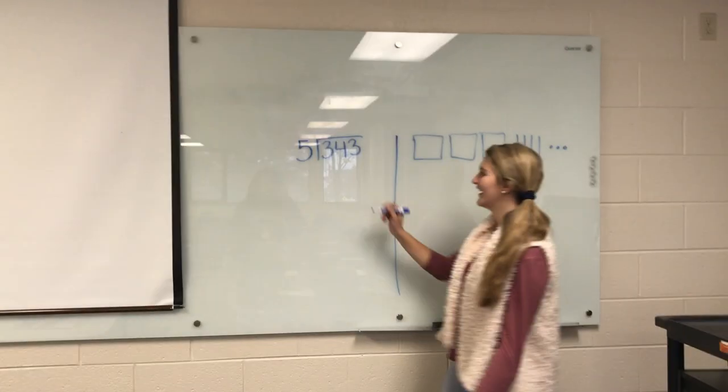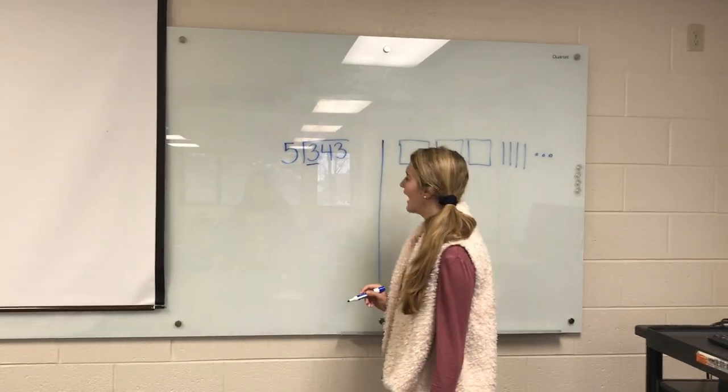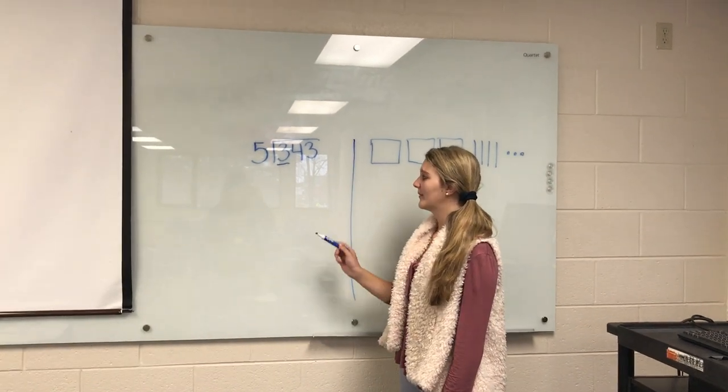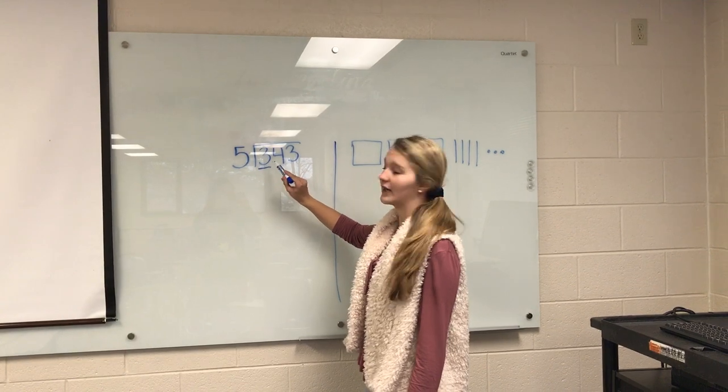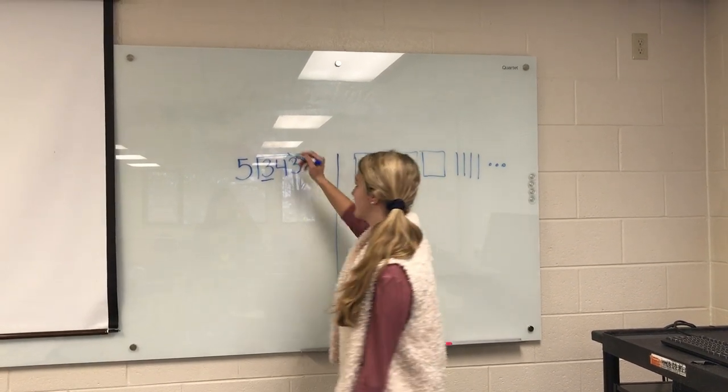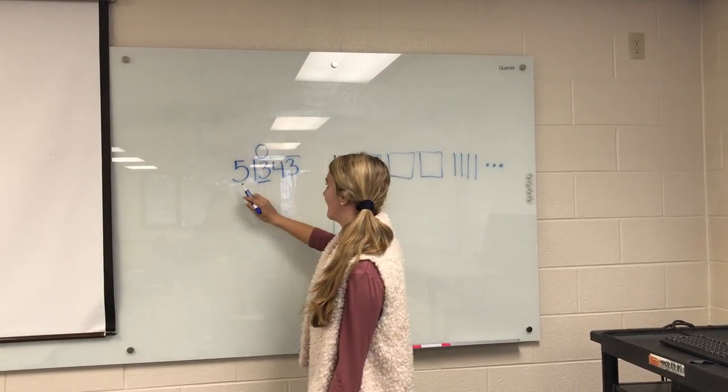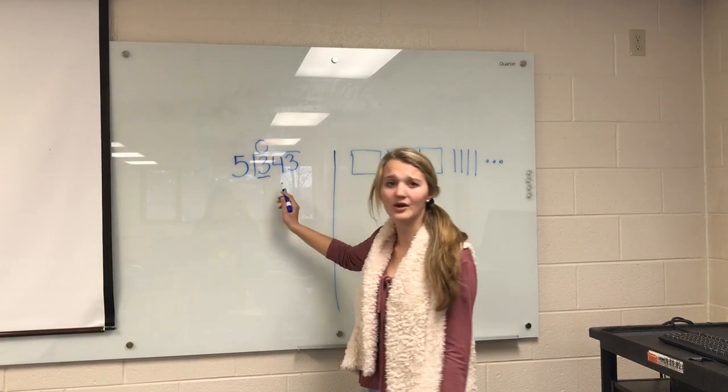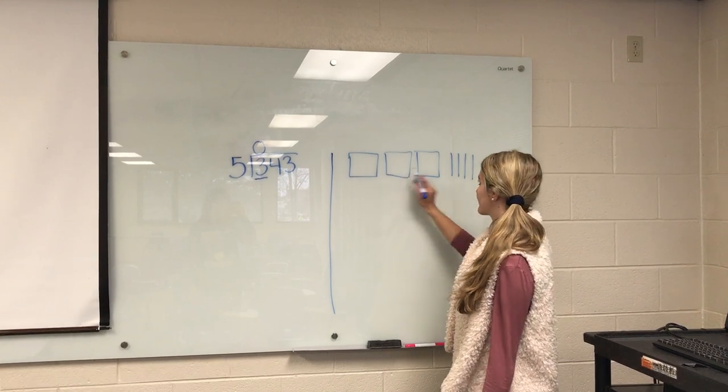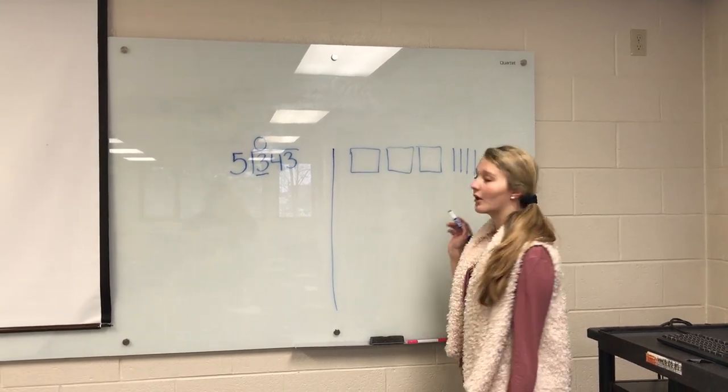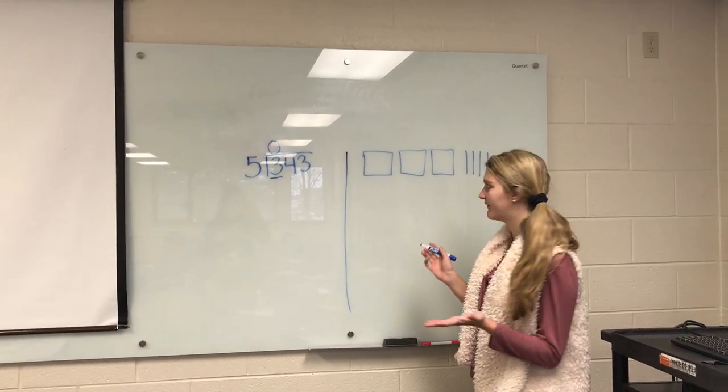We're first going to start and look at the hundreds place, and we are going to ask ourselves, how many groups of 5 hundreds can I take out of 3 groups of 100? And that answer is 0. We cannot take 5 groups of 100 out of 3 groups of 100 because there's not enough. So this results in us having to regroup these 3 hundreds into longs so we're able to take groups of 5.